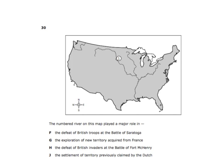The numbered river on the map played a major role in the exploration of new territory acquired from France. That river is the Missouri River, which connects into the Mississippi River. The Missouri and Mississippi Rivers combined are the largest river system in our country. This is the Louisiana Purchase Territory — that whole middle swath of the country purchased by Thomas Jefferson from France in 1803 for only $15 million.